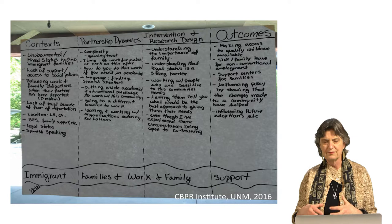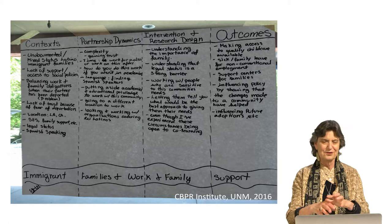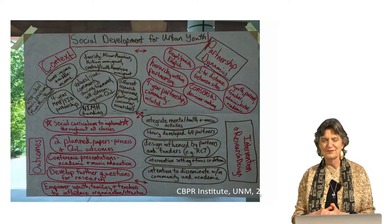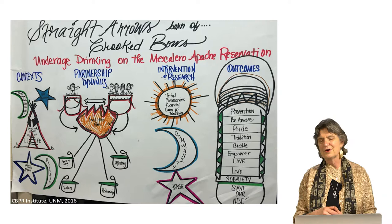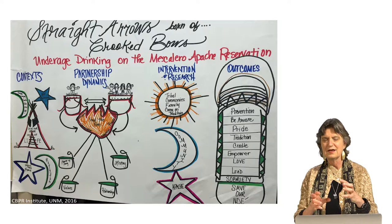One group was working with immigrant families for work and family support. They looked at their context of undocumented status, their partnership dynamics, their intervention and research design — and created their own lists and the outcomes they wanted to see. A different group was working on social development for urban youth. And then there was a model from a tribal community looking at how to address underage drinking on a reservation — their context, their way of presenting their own dynamics.